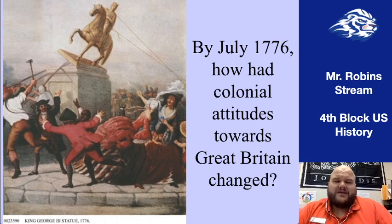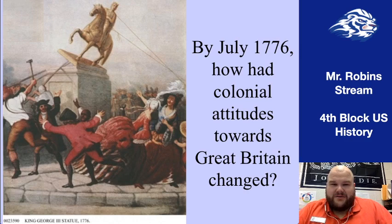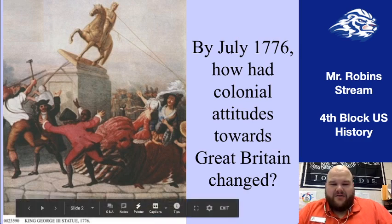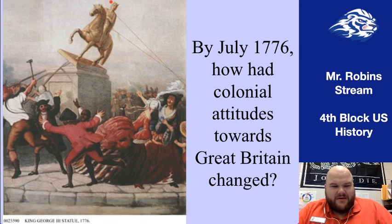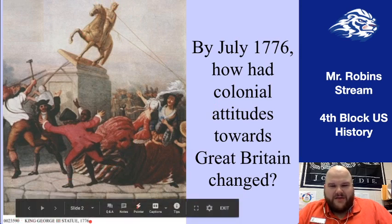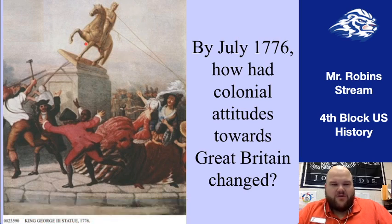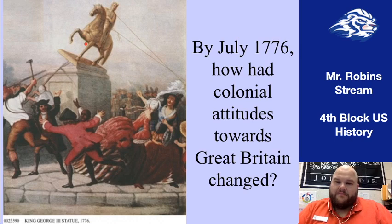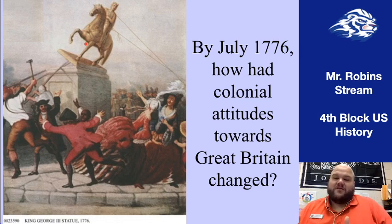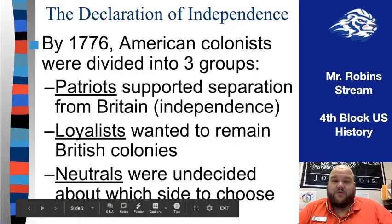This image gives you an idea about how colonial attitudes may have been changing towards Great Britain by July 1776. You can see what's going on — King George III's statue being torn down by colonists. Is that something we would have seen at the beginning of Unit 2? Probably not, but now we are, and there is a clear reason for that. All that stuff that led up to this — the road to revolution — means that by July 1776, the colonists are done trying to negotiate and now really want independence.